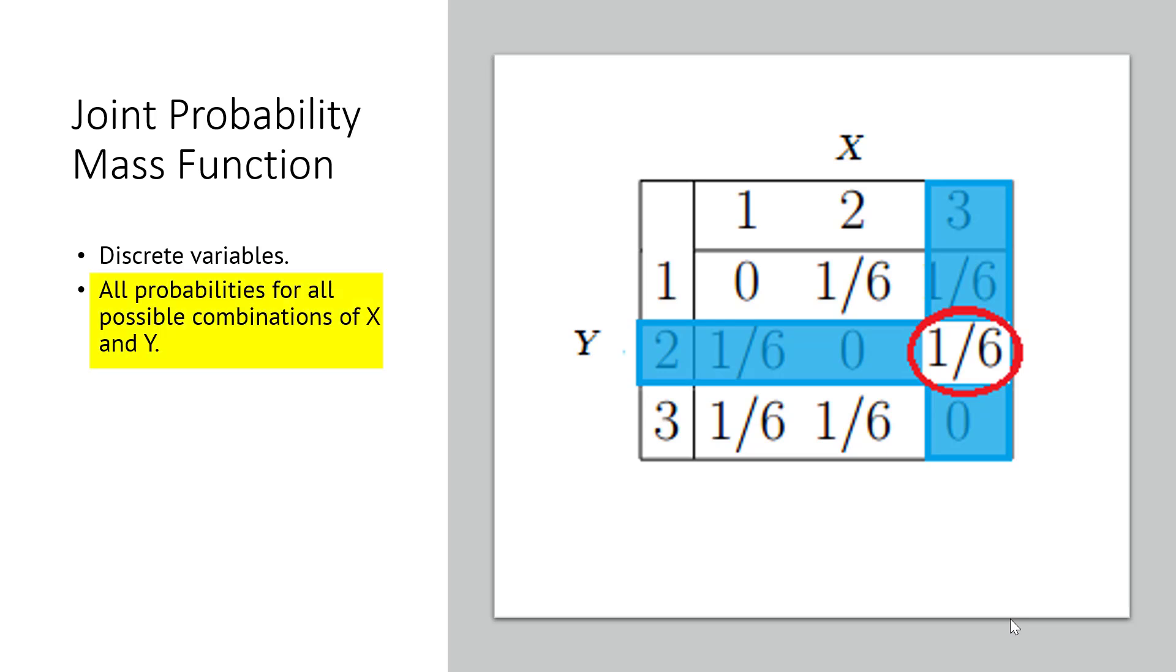Basically, if you have found all probabilities for all possible combinations of X and Y, like shown in this table, then you have created a joint PMF.